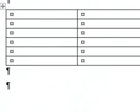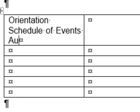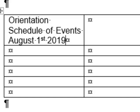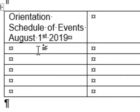Now here's our table. The top row of the table is going to be the title. So we'll type: Orientation Schedule of Events, August 1st, 2019. You will put the date that applies to your semester. We're going to center this across all the columns, but we're going to do that later, so don't worry about it now.